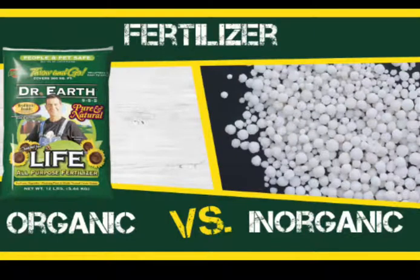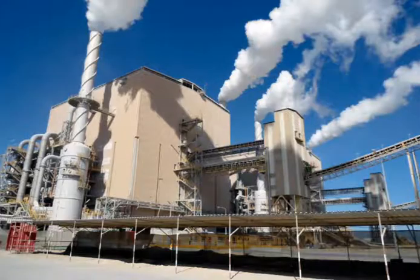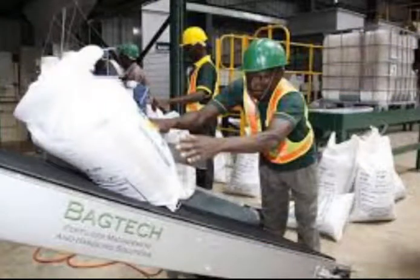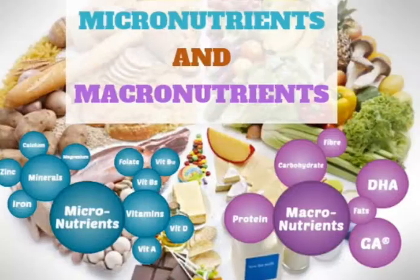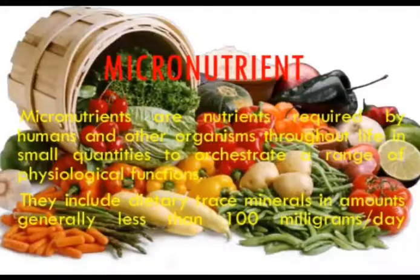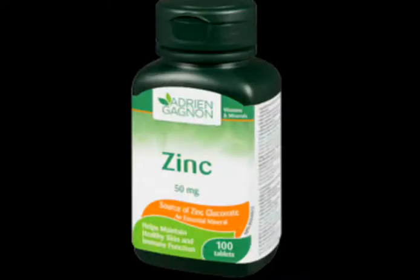Fertilizers are also called artificial manures, which are artificially obtained in factories. They contain specific nutrients which are released very fast and are absorbed by plant roots. Nutrients are divided into two groups: micronutrients and macronutrients.